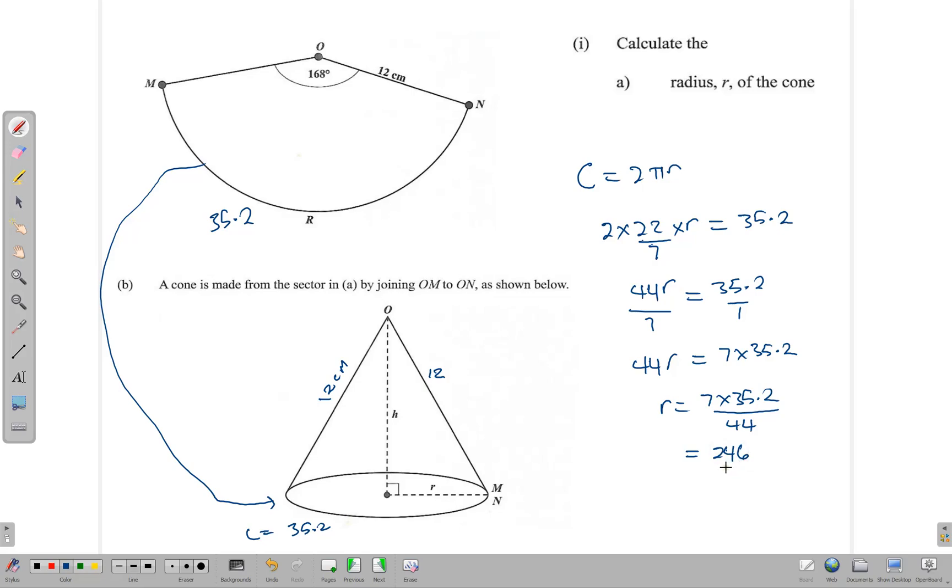Dividing that by 44 gives us 5.6 centimeters. So our radius here is 5.6 centimeters. Moving on.